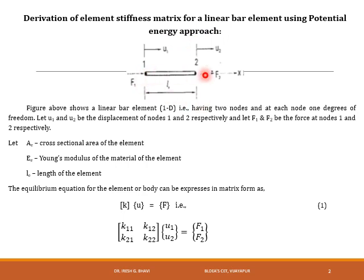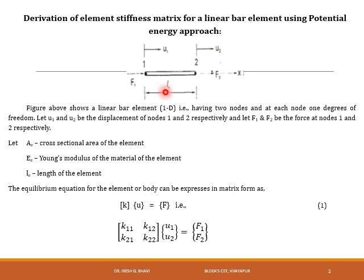The figure shows a linear bar element. A linear bar element has two nodes, and at each node there is 1 degree of freedom — that is, x-displacement u1 at node 1 and x-displacement u2 at node 2. Let F1 and F2 be the forces acting on the element at node 1 and node 2 respectively, and let LE be the length, AE be the cross-sectional area, and E be the Young's modulus of the material.